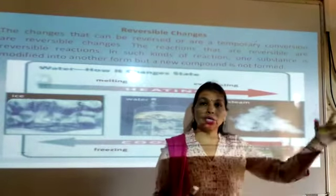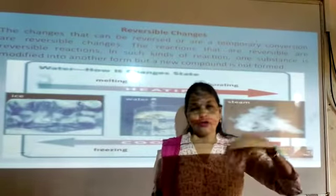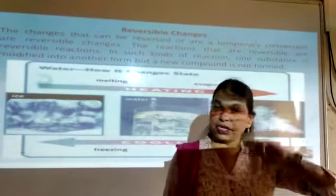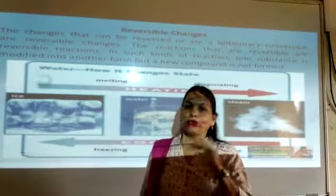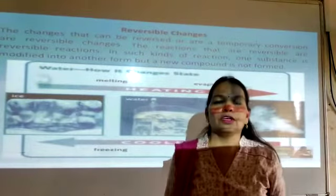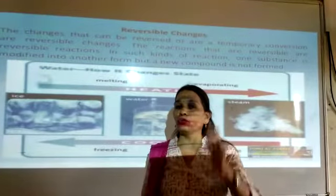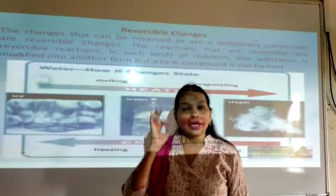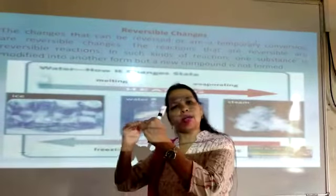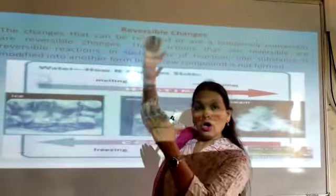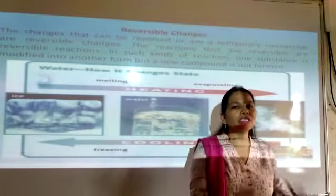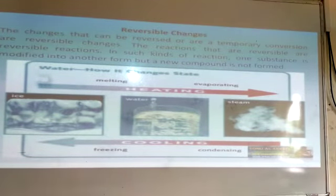Water is heated by the sun. Water bodies — like seas, oceans, rivers, tanks, and wells — water is evaporated by the heat of the sun and converted into water vapor. That water vapor mixes with the atmosphere, becomes heavy, and is converted into clouds. The cloud condenses, meaning it cools down, and again brings rain as a form of water. The water cycle is the best example of a reversible change.